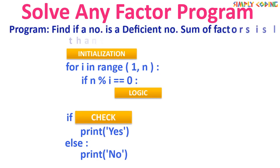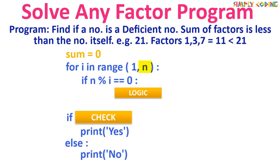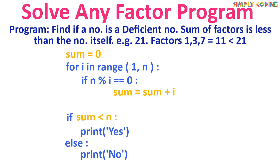Our next program is deficient number, where the sum of factors excluding the number itself is less than the number. For example, 21 has proper divisors 1, 3, and 7; summing them gives 11, which is less than 21. In initialization we initialize sum to 0, run the range function with stop value n, add the factor to sum in logic, and check if sum is less than n in the check section.